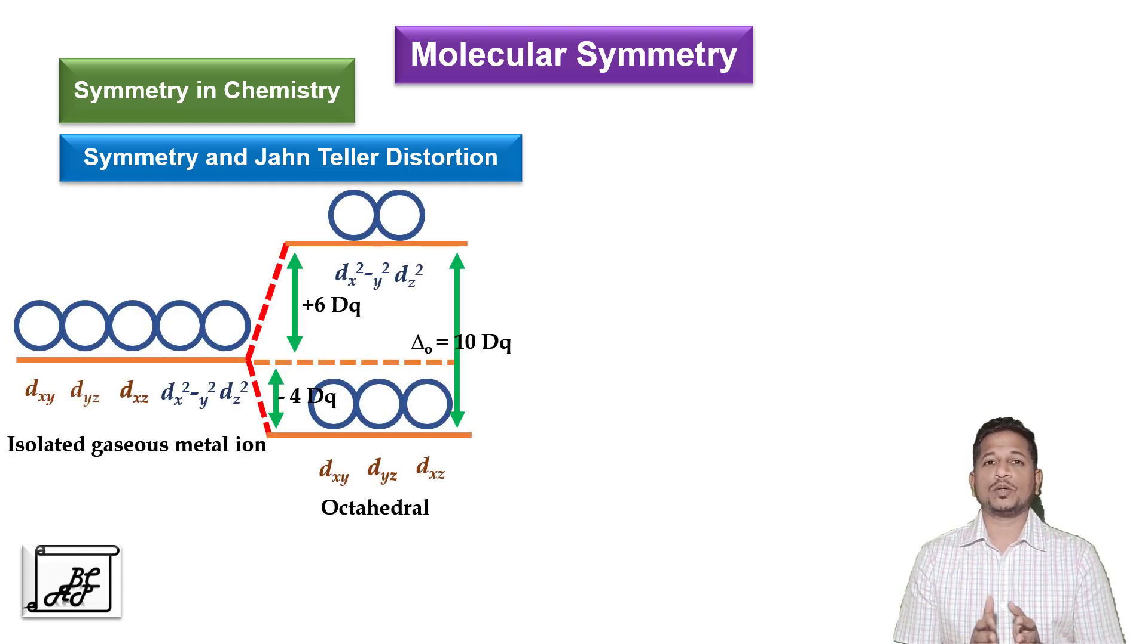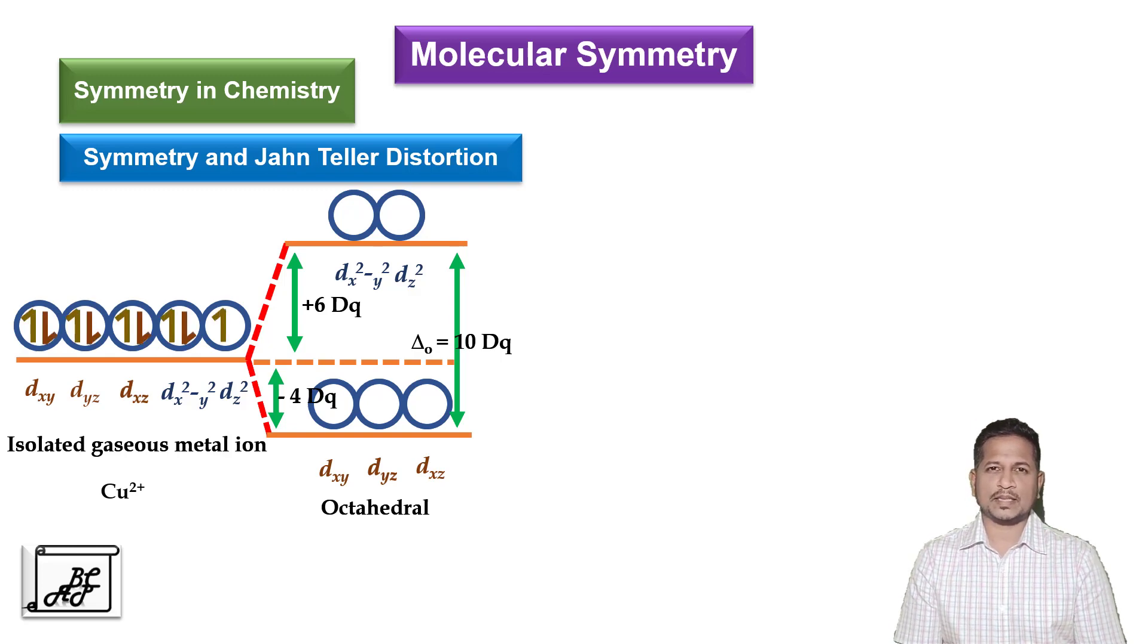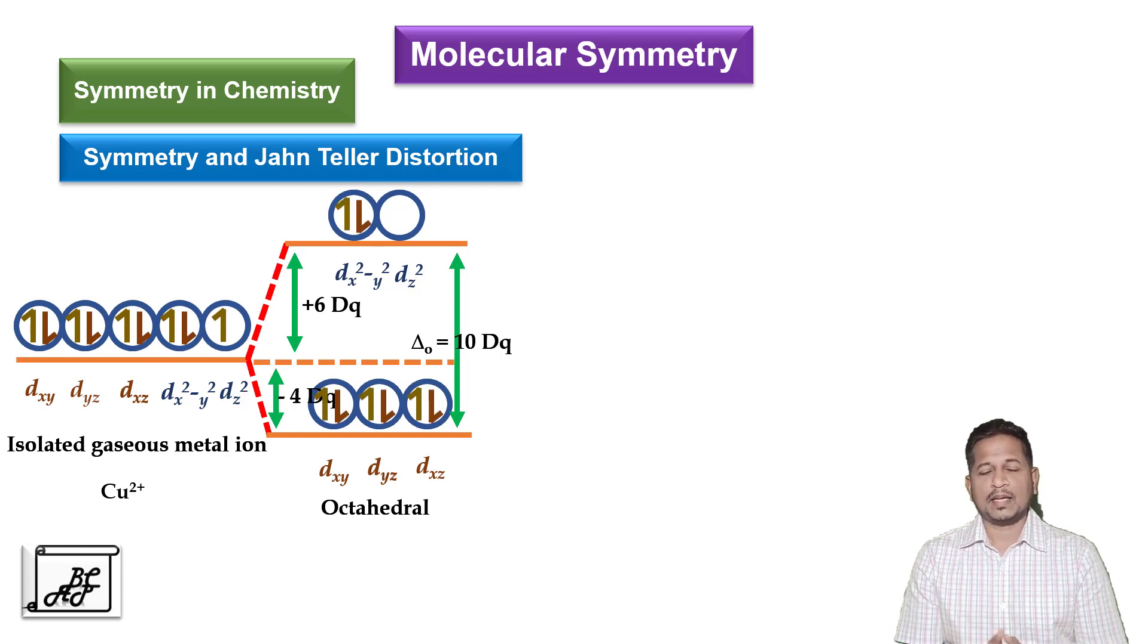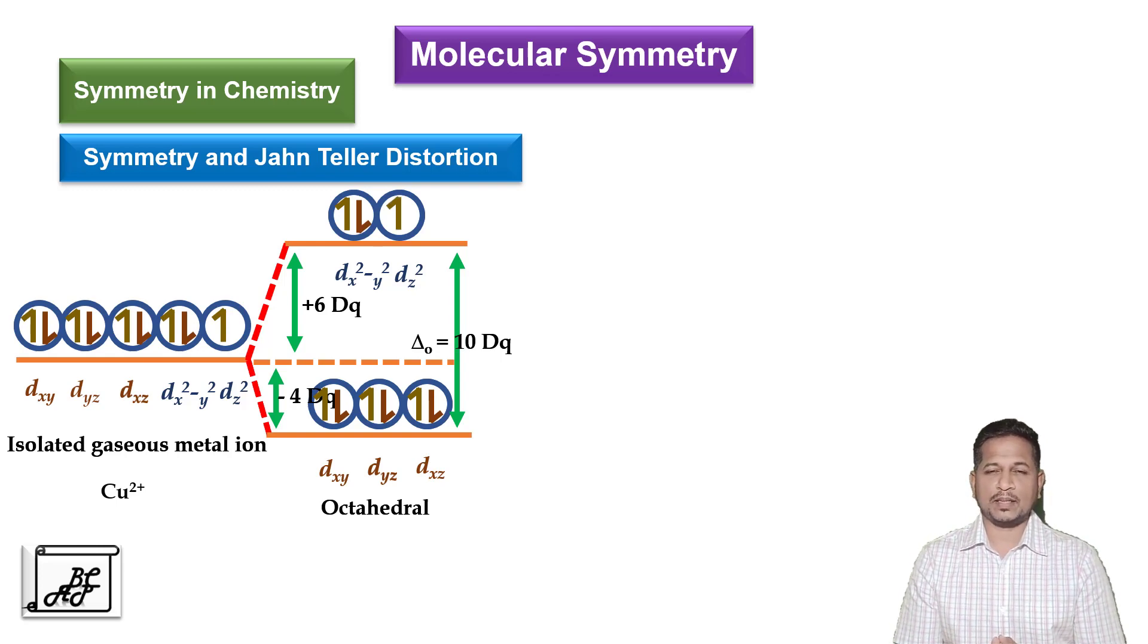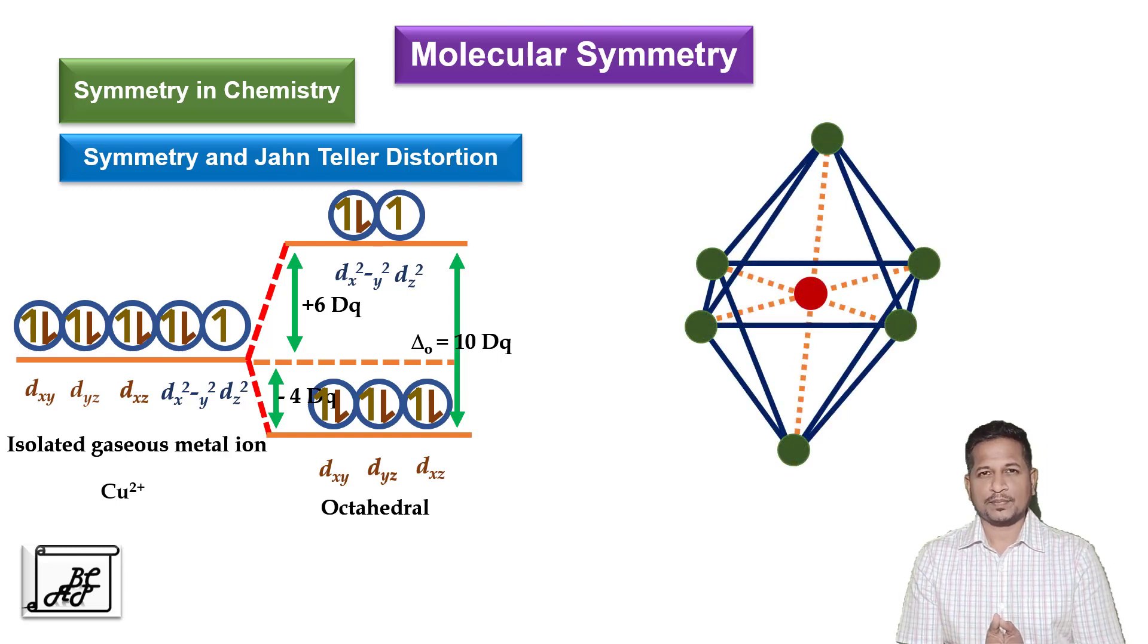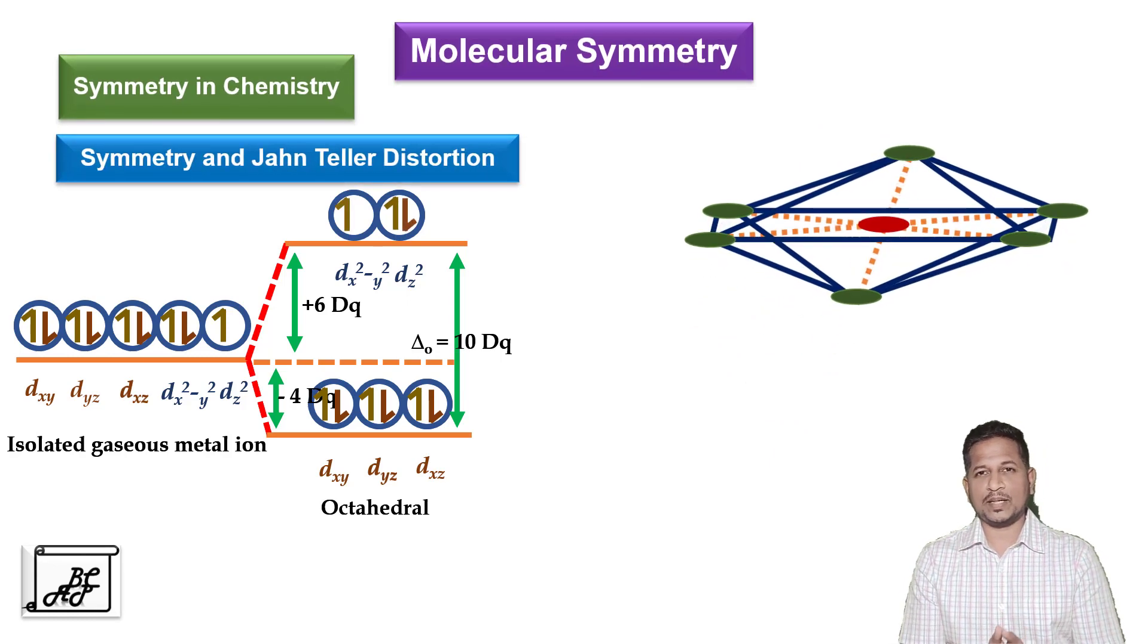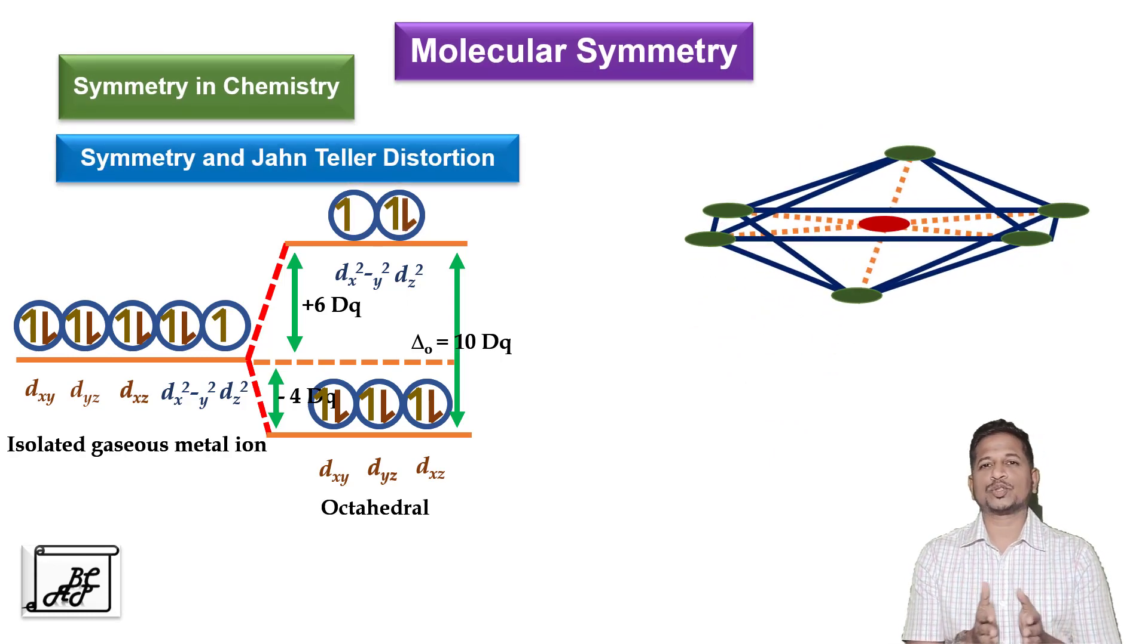Here we can understand Jahn-Teller distortion and study the structure of molecules. For example, copper 2+ ion has d9 electronic configuration with only one unpaired electron. If we place all these electrons in various t2g and eg orbitals, if the last electron enters into the dz square orbital, we can get two long bonds and four short bonds. Whereas, if the last electron enters into dx square minus y square orbital, we get four long bonds and two short bonds.